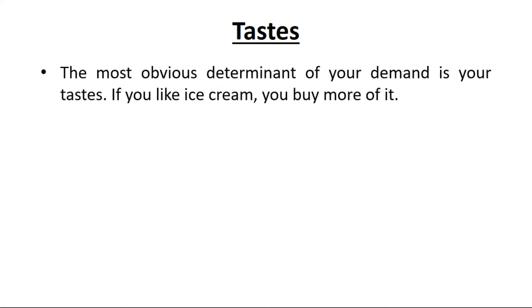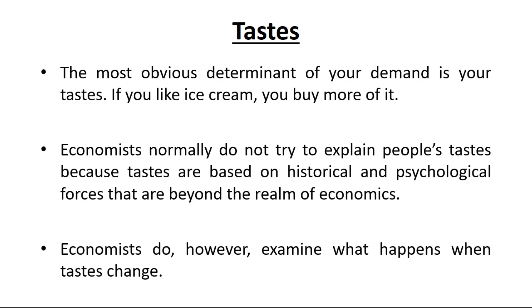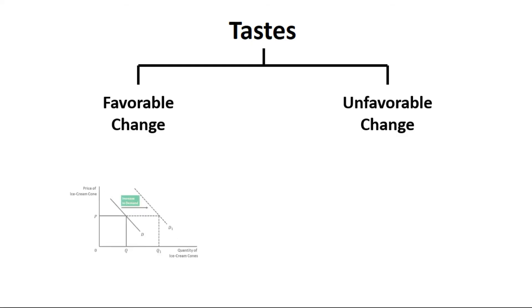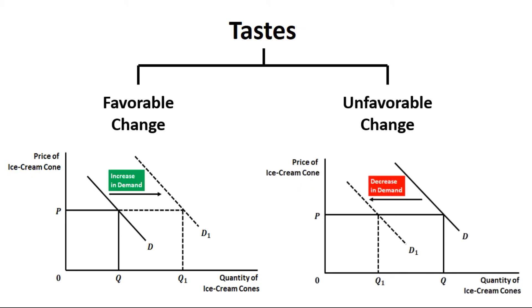The next variable that affects the shift in demand curve is taste and preference of a consumer. The most obvious determinant of your demand is your taste — if you like ice cream, you buy more of it. Economists normally do not try to explain people's tastes because tastes are based on historical and psychological forces. However, economists do examine what happens when tastes change. A favorable change in taste and preference increases demand — a rightward shift — while an unfavorable change leads to a leftward shift, that is a decrease in demand.